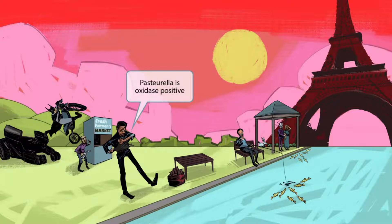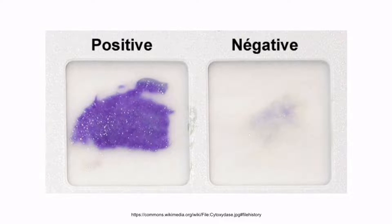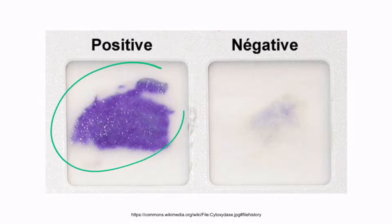Now let's wrap up this video by discussing Pasteurella multicida. We've added a blue necklace to the pastor guy, and just like in our other videos, this is here to help you remember that Pasteurella is oxidase positive. This is an image of the oxidase test, which we covered in more detail in section 20, our Neisseria overview video. Recall that if the organism is oxidase positive, the disc will turn a blue or purple color. So remember, Pasteurella is oxidase positive.